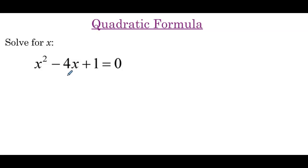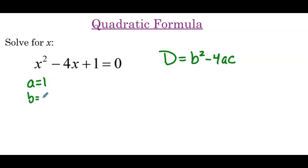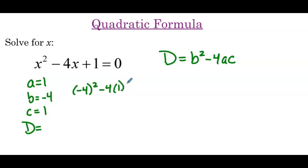Now to confirm that this quadratic is not factorable, let's find the discriminant, which if we recall is b squared minus 4ac. So we have a equals 1, b equals negative 4, c equals positive 1, and the discriminant with a quick computation is negative 4 squared minus 4 times 1 times 1, which is 16 minus 4, which is 12. Now that tells us that the quadratic is not factorable because it's not a perfect square.